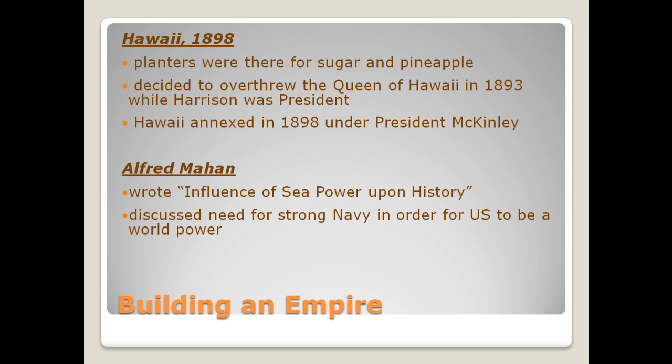Part of the reason we thought Hawaii would be a good acquisition was not only for commercial purposes — products like sugar and pineapple — but also because we could use it as a naval base. At about this time, Alfred Mahan published a book called 'The Influence of Sea Power Upon U.S. History,' arguing that in order to be a world power, you had to have a strong navy, and we needed naval bases around the world to make that possible.